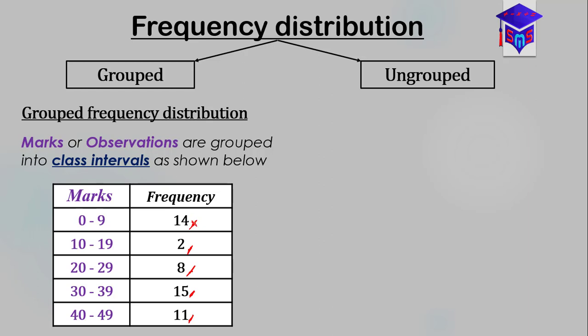The frequency of 14 for the interval 0 to 9 consists of marks like 5, 7, 6, 8, 0, 9, 4, or 3 — but there are 14 of them. For the interval 10 to 19, only 2 scores fall in that range. It could be 15 and 16, or 15 twice, or 18 and 11, or 10 and 19.